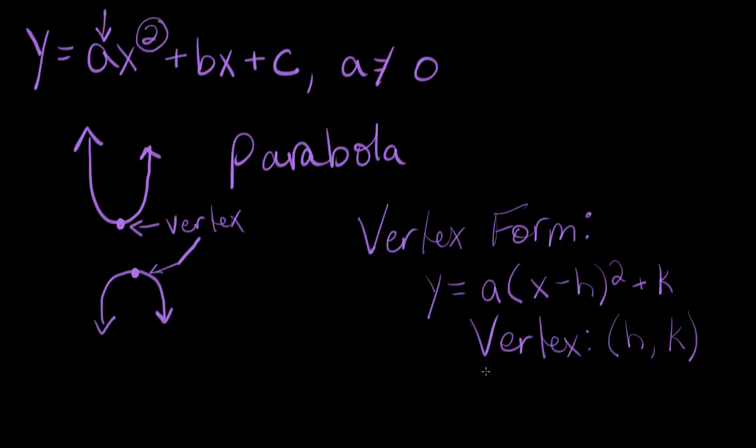They also give you the axis of symmetry using this form. The axis of symmetry is x equals h. Very simple. x equals h. Now for those of you that are wondering, what is the axis of symmetry?